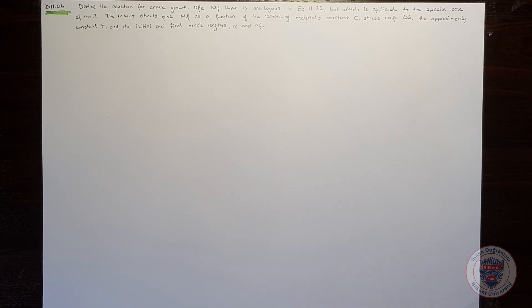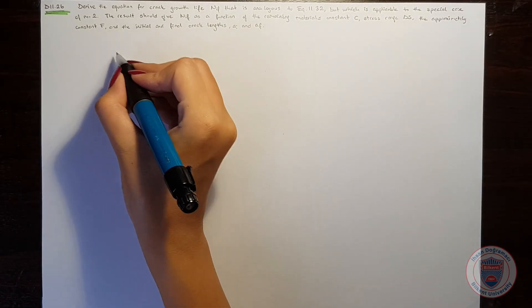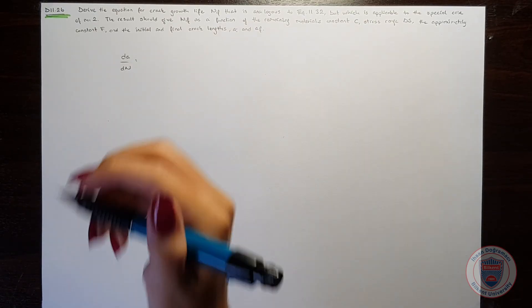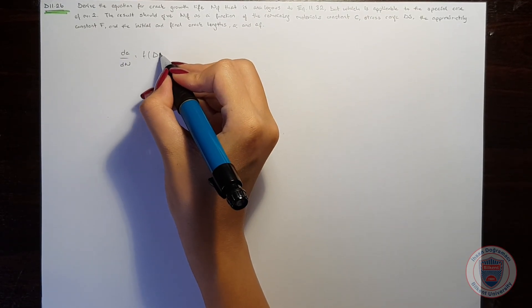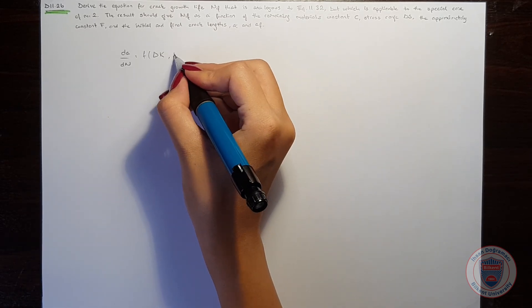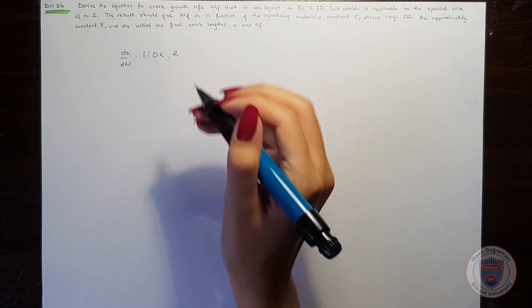In this question, our goal is to derive an equation for crack growth life N_f, which is applicable to the special case of m equal to 2. The result will be a function of C, delta S, F, and the initial and final crack length. We know that da/dN will be a function of stress intensity range and R, which is S-min over S-max.